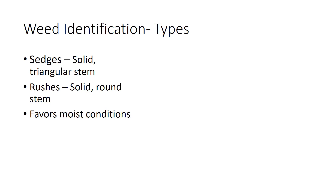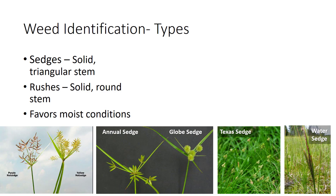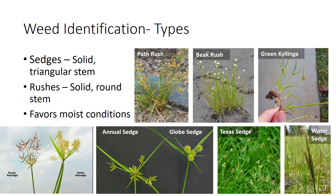Sedges have triangular-shaped solid stems, while rush stems are round and solid. Both sedges and rushes favor a moist habitat. Economically important members include yellow and purple nutsedge, and to some degree globe sedge, annual and water sedge, plus path and beak rush, and perennial Koelinga.